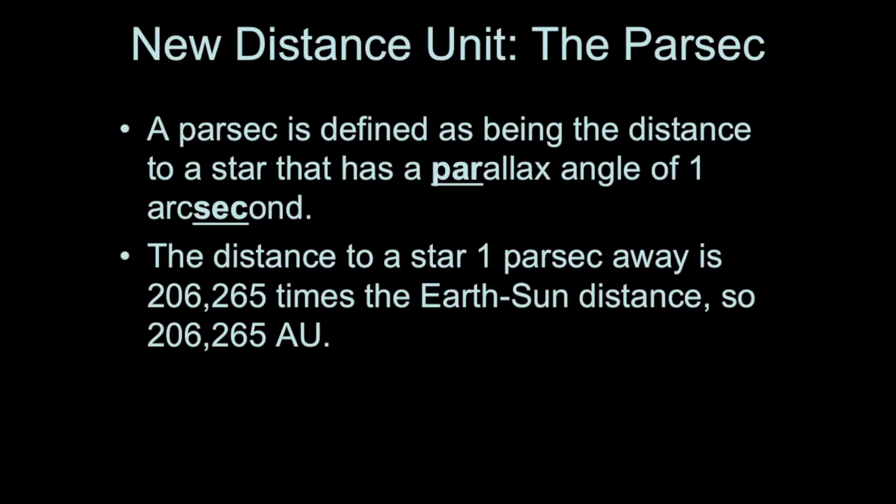If we figure out how many AUs are in one parsec, it turns out that one parsec is 206,265 AU. You can see why astronomers don't want to use AUs, astronomical units, as the unit of distance for nearby stars. We need something else. And the parsec turns out to be a natural unit coming from the geometry of the situation.